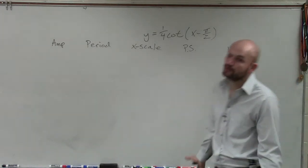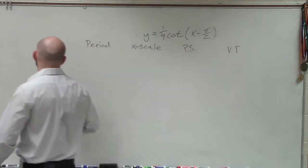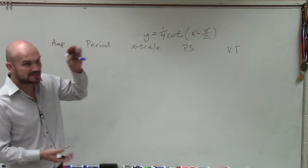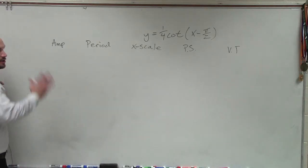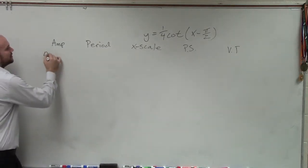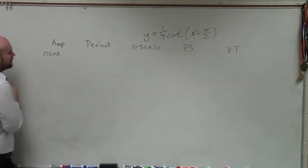We can do this for all of our graphs. We need to at least remember all this information. Amplitude, remember, that's going to be the half distance from the maximum to the minimum. But cotangent goes infinitely to infinity and to negative infinity, so we do not have an amplitude.